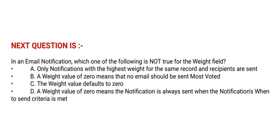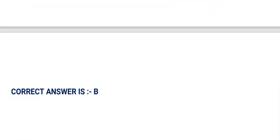Next question is: in an email notification, which one of the following is not true for the wait field? Option A: only notifications with the highest wait for the same record and recipients are sent. Option B: a wait value of 0 means that no email should be sent. Option C: the wait value defaults to 0. Option D: a wait value of 0 means the notification is always sent when the notification's when-to-send criteria is met. And the correct answer is option B.